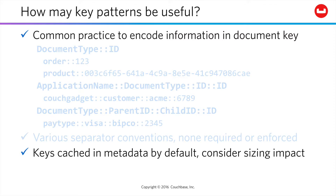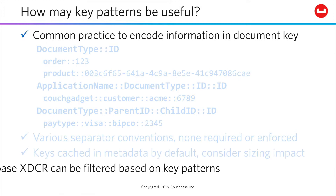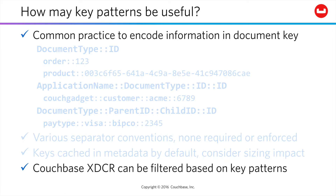A useful point is that your keys are cached in metadata by default. So if you're working with large bodies of data — and with Couchbase, you very likely are — you want to consider the sizing impact of your key if you choose a very long key pattern. Another useful note: our cross-data center replication can be filtered based on these key patterns to distinguish which data sets reside in which data centers around your geographic regions.